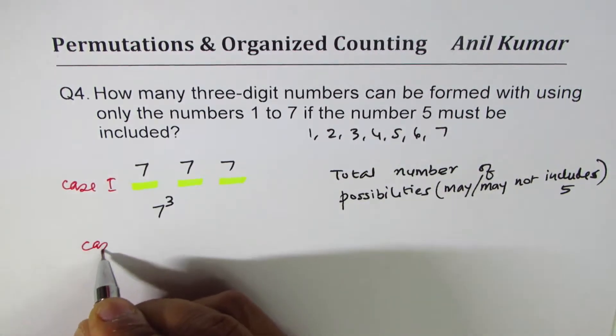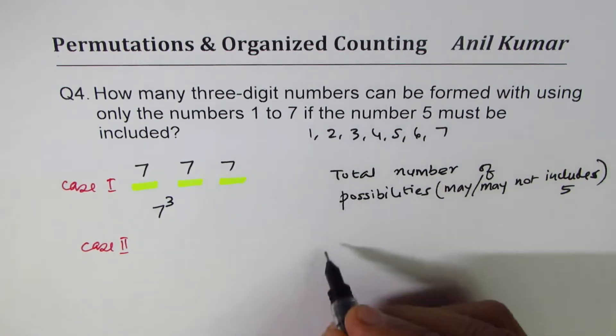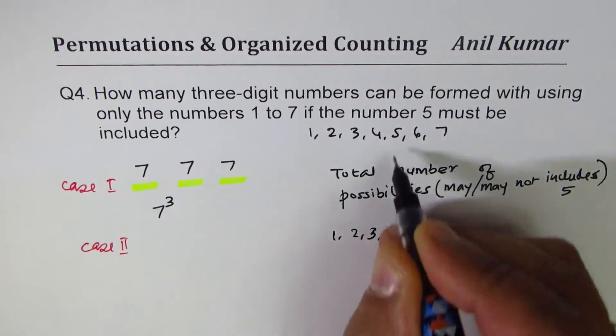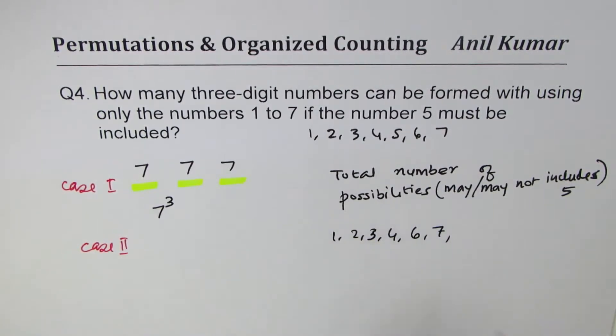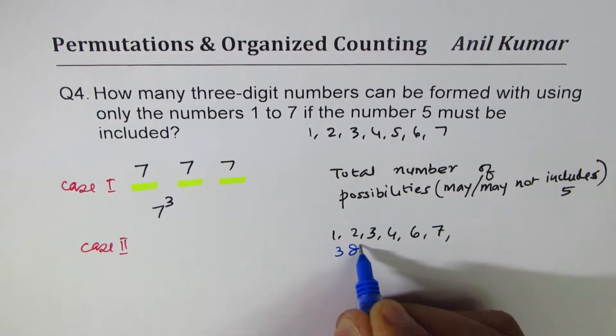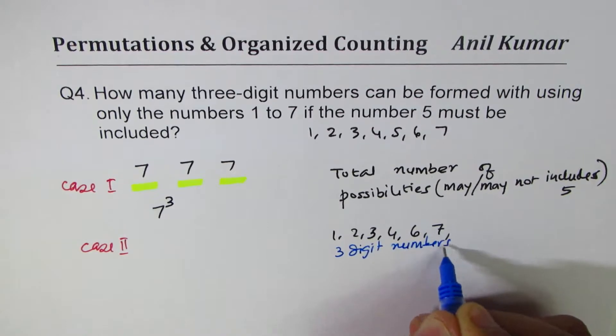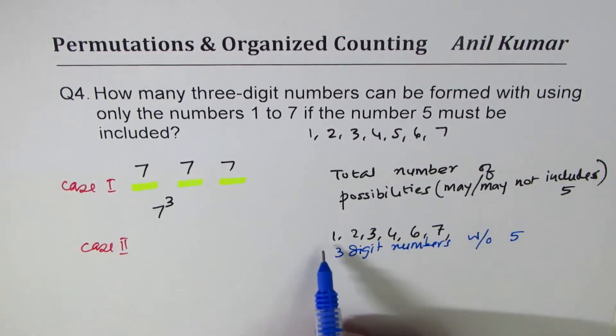In case two, what we will do is select the numbers 1, 2, 3, 4 and omit 5, 6, and 7. So how many numbers can you form without 5? That is to say, we are looking for three-digit numbers without 5 using the same numbers.